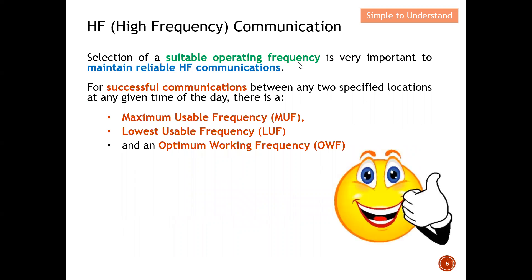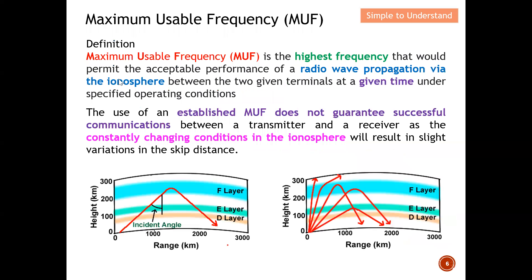Selection of a suitable operating frequency is very important to maintain reliable HF communication. For successful communication between any two specific locations at any given time of day, there is a maximum usable frequency, a lowest usable frequency, and also an optimum working frequency. The maximum usable frequency is the highest frequency that would permit acceptable performance of a radio wave propagating via the ionosphere between two given terminals at a given time under specific operating conditions.